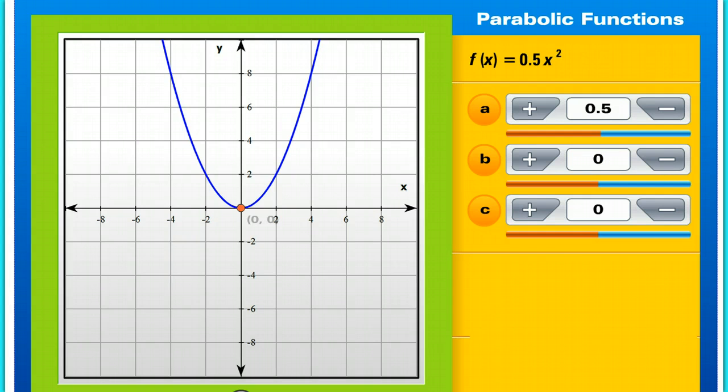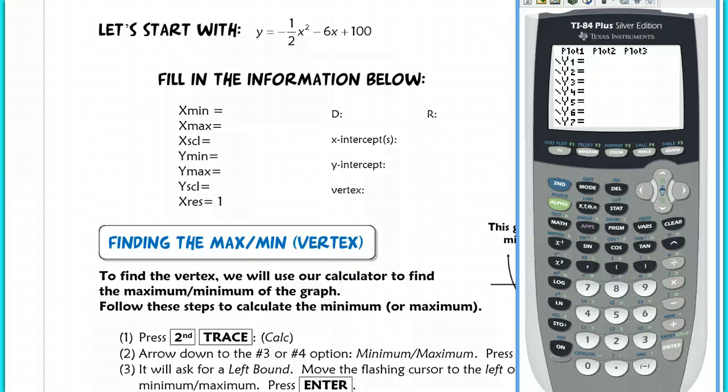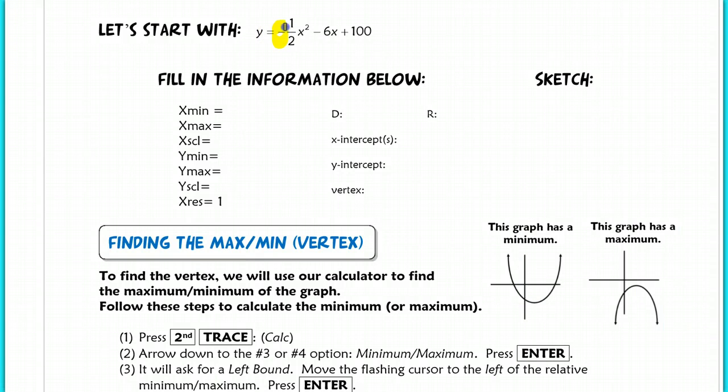We're going to start with this function, y = -1/2 x² - 6x + 100. So there's a few things we want to get started with. First, we know this is a parabola and it's going to open downward because of that negative sign. It's going to roughly look like that. But I also know where the y-intercept is, because if I plug x into this function, this term drops out, 0² is 0, so it goes away. This term will also drop out, and it will leave me with 100. So the y-intercept is going to be 0, 100. That tells me something about what I want to view in my calculator.